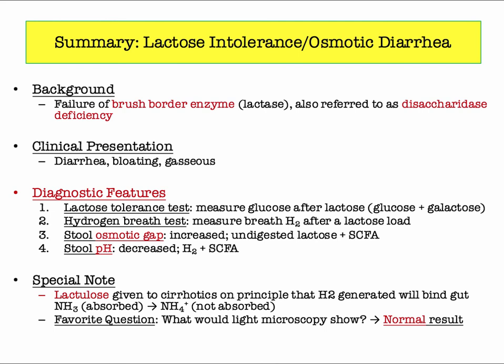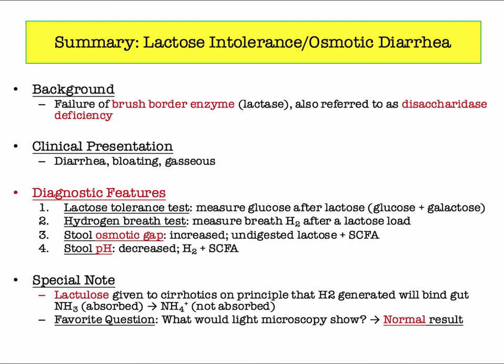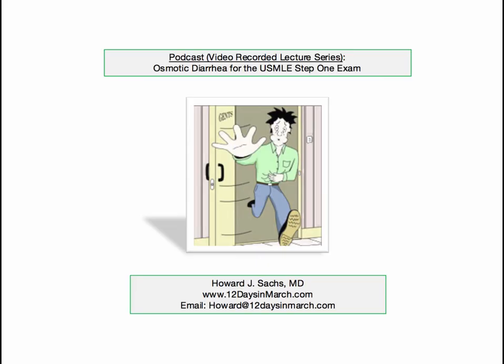I've included a summary slide on the key features of this topic. Pay particular attention to the different descriptions used by the NBME, including brush border enzyme and disaccharidase deficiency. Note also the four characteristic diagnostic tests with an emphasis on osmotic gap and pH. Under special notes, I include a couple of derivatives that are fair game on test day. That concludes this discussion of osmotic diarrhea for the USMLE Step 1 exam. If you have any questions or concerns, please email me at 12days. Thank you.